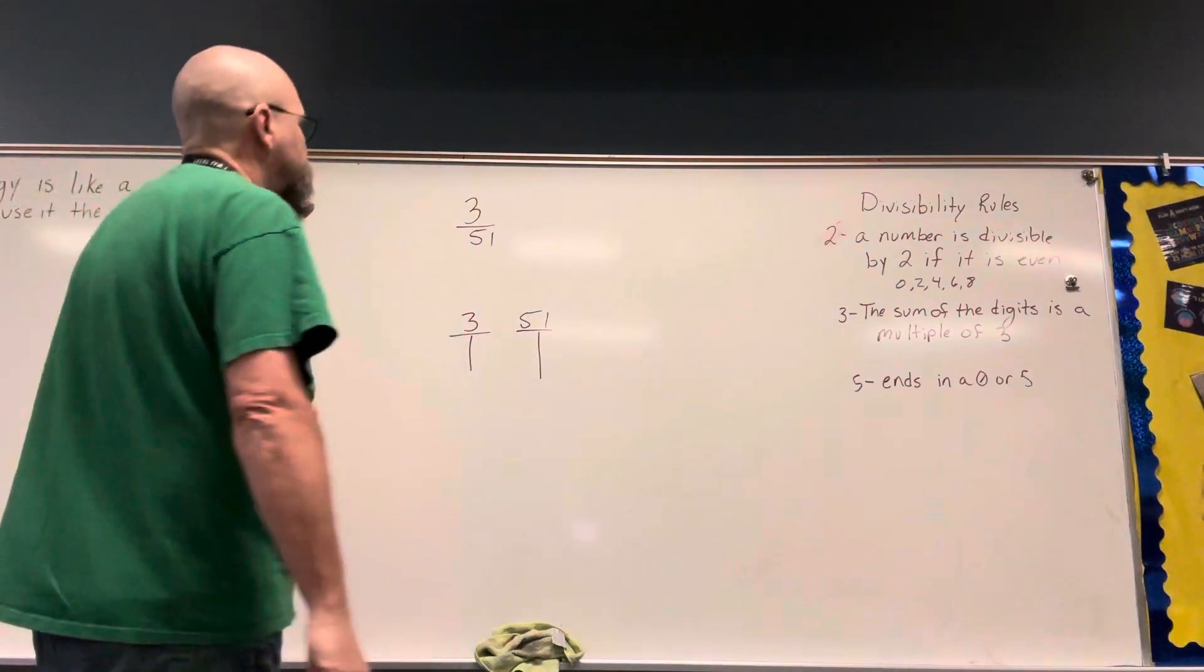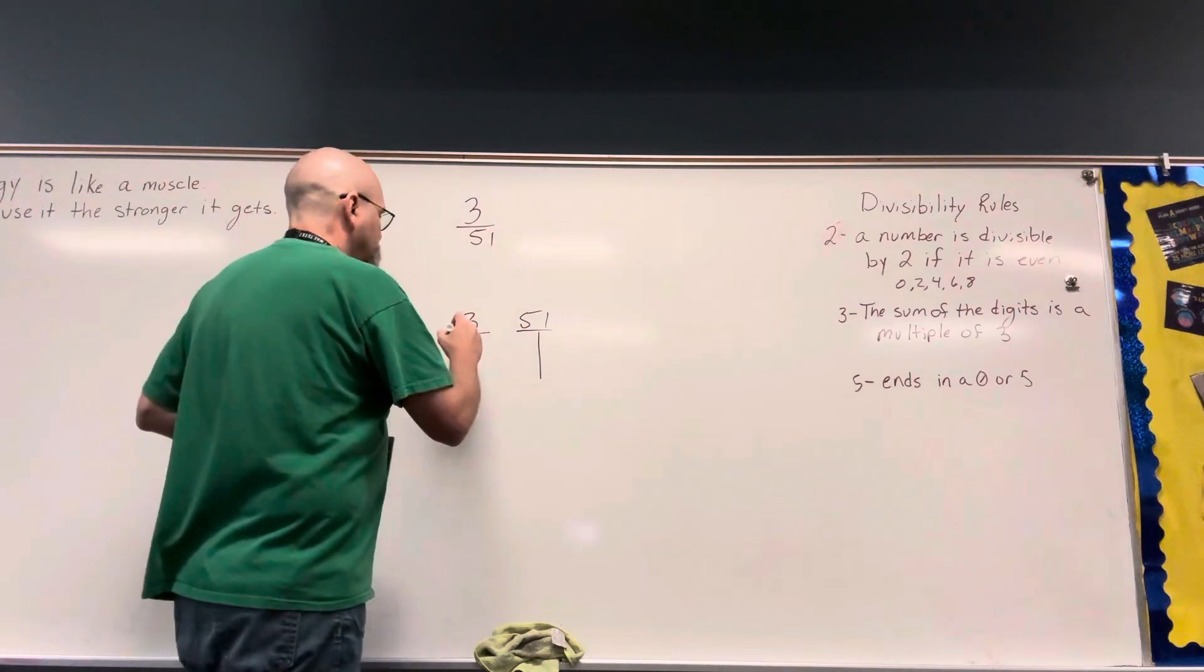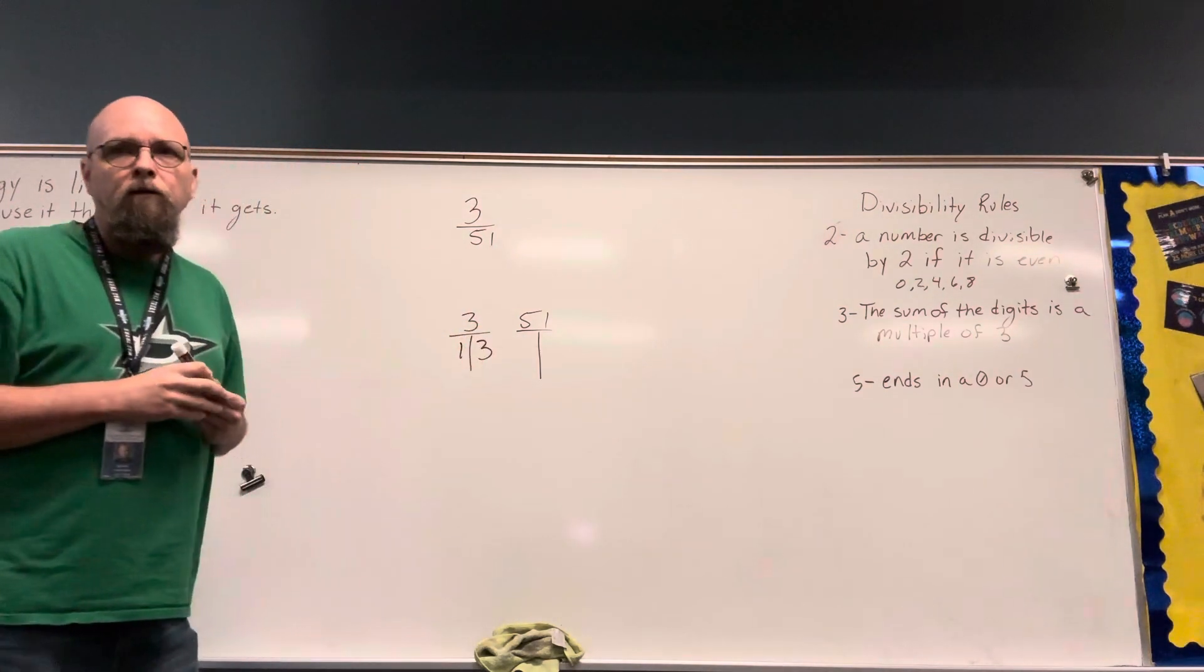All right, 3 over 51. If I find my factors of 3, it is prime, so it is 1 and 3.